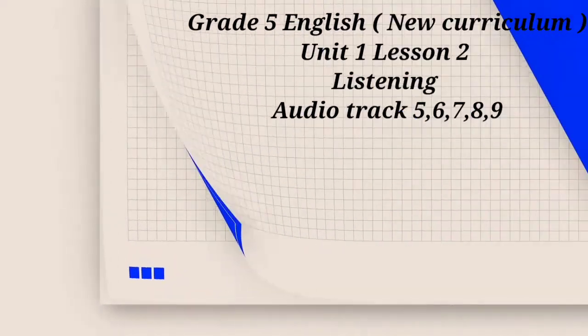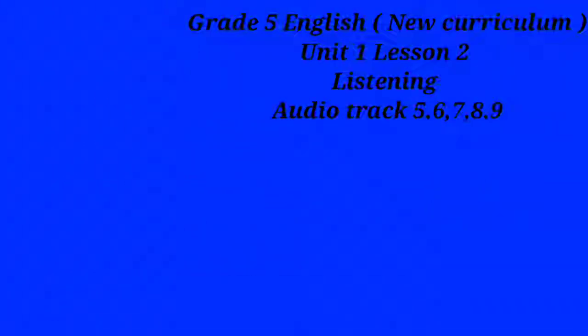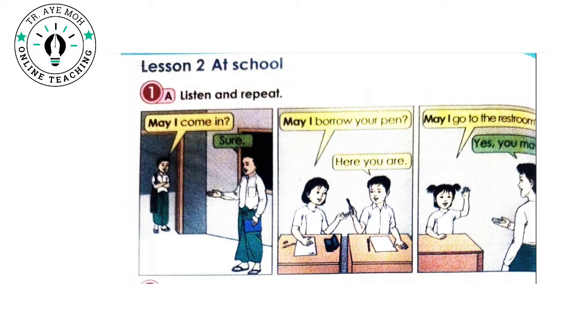Unit 1. Lesson 2. Track 5. 1A. Listen and repeat. May I come in? Sure. May I borrow your pen? Here you are. May I go to the restroom? Yes, you may.